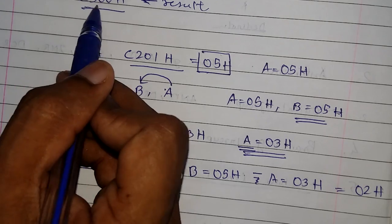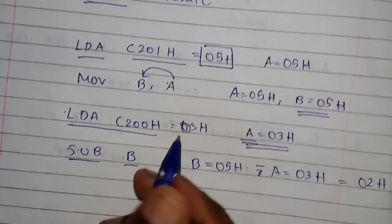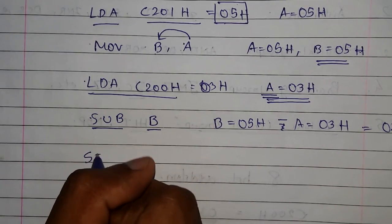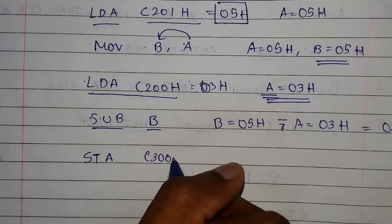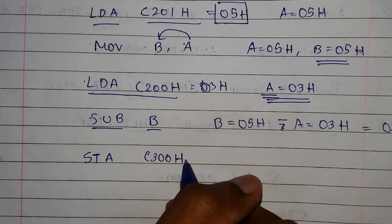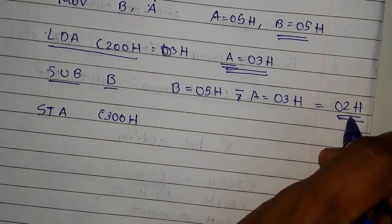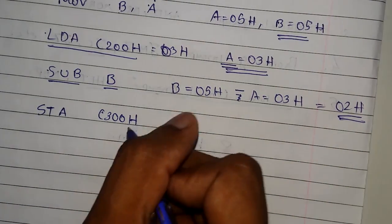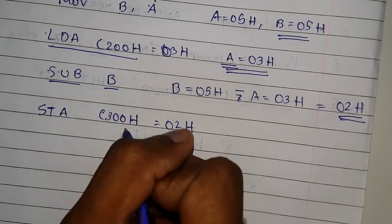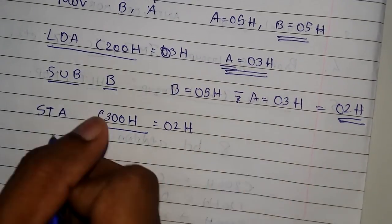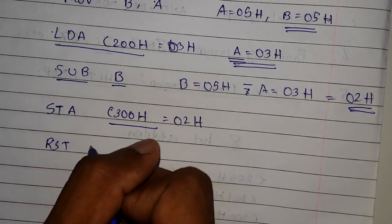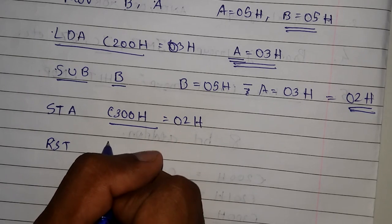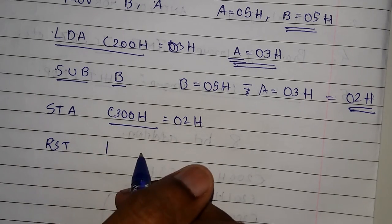We have to store this answer in the required memory location C300H. So we will use STA — Store Accumulator Direct — to C300H. Our result will be stored in this memory location. As the program has ended, we end it with RST1.